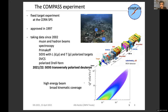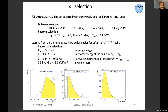COMPASS is a fixed-target experiment at the CERN SPS, taking data since 2002. Its experimental program includes spectroscopy, Primakoff, DVCS, polarized Drell-Yan, and SIDIS. Notably, a new SIDIS run with a polarized deuterium target is planned this year. Thanks to the high-energy beam, COMPASS has a broad kinematic range, as seen in the x–Q² scatter plot.